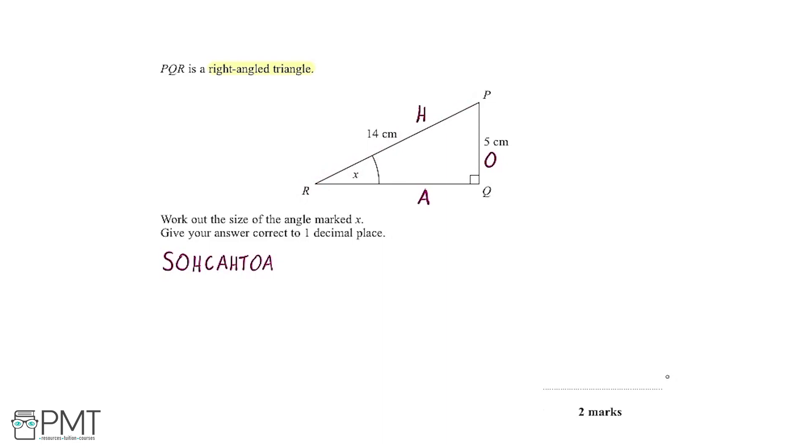Now, when you think about which side is going to be useful, which sides do we have information for? Well, we haven't got any information for A, the adjacent side, because it doesn't tell us what length it is. However, for the hypotenuse and the opposite, we know this is 5 centimeters and this is 14.